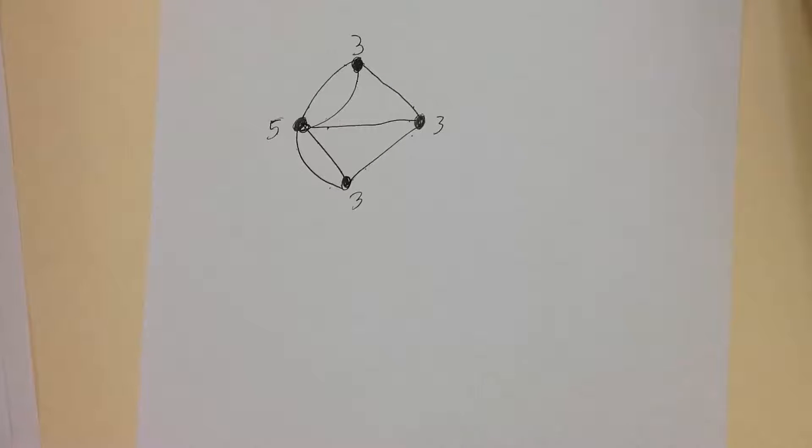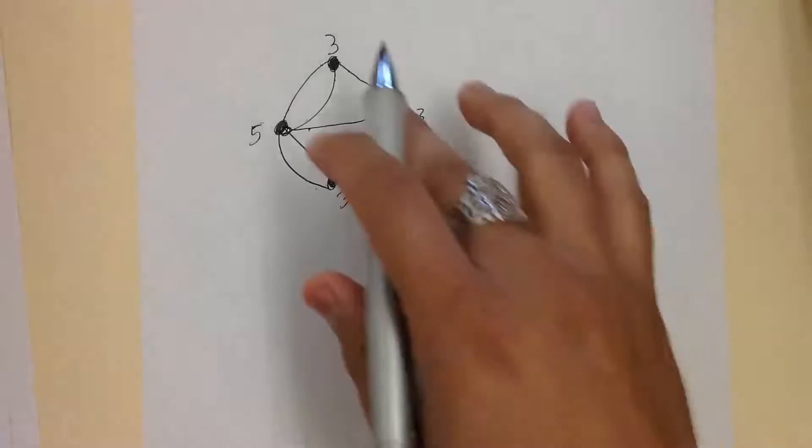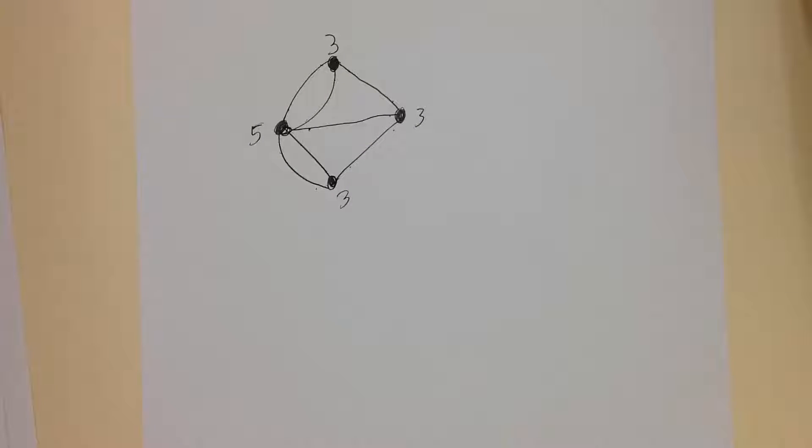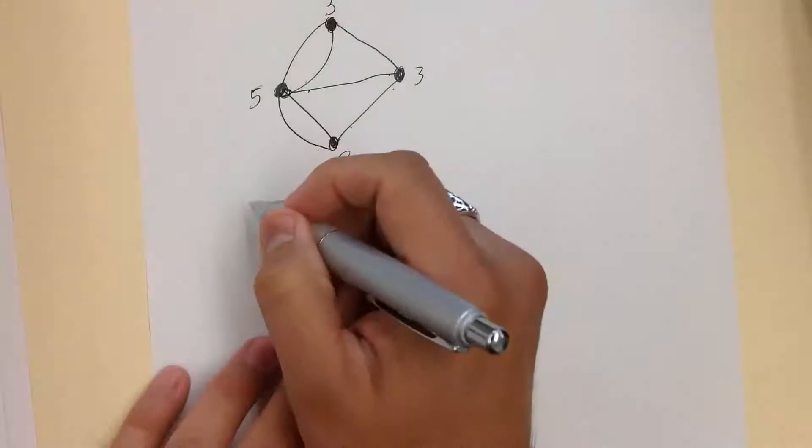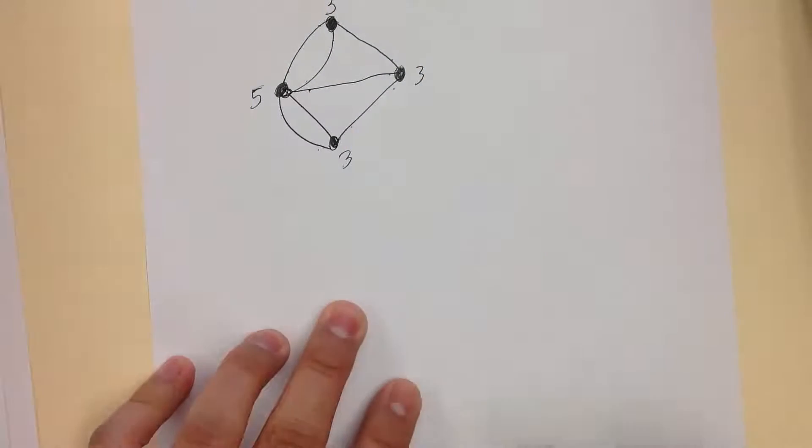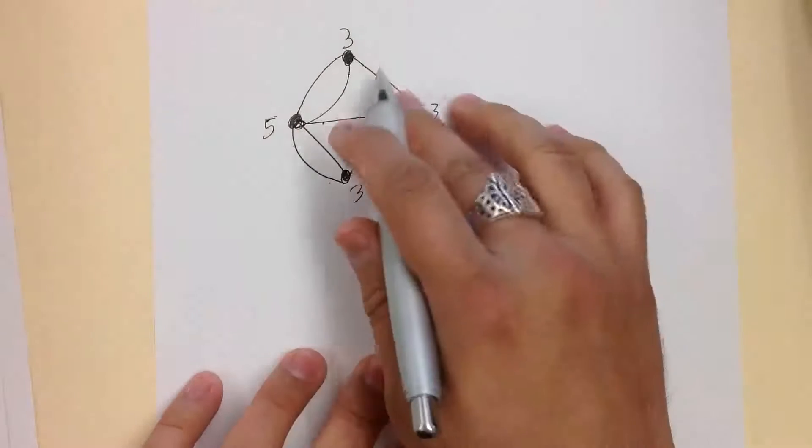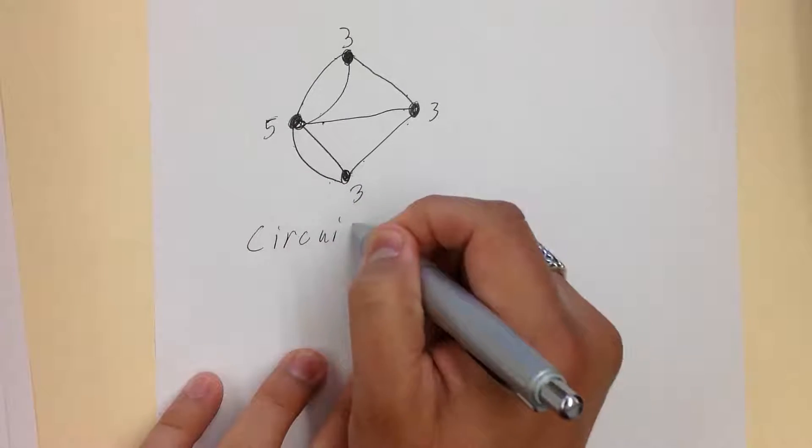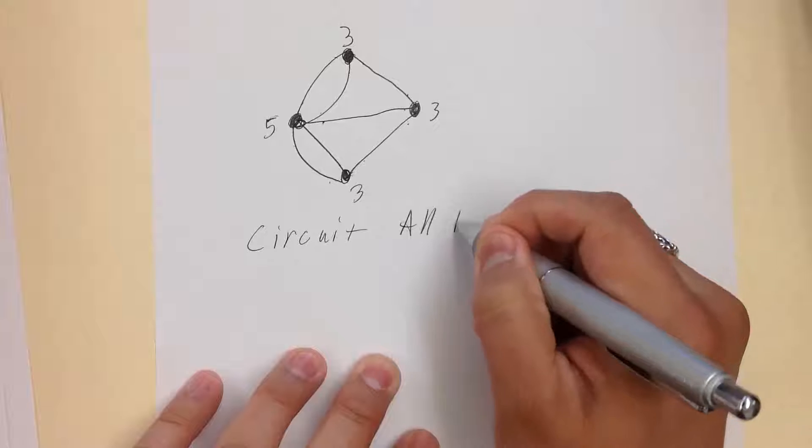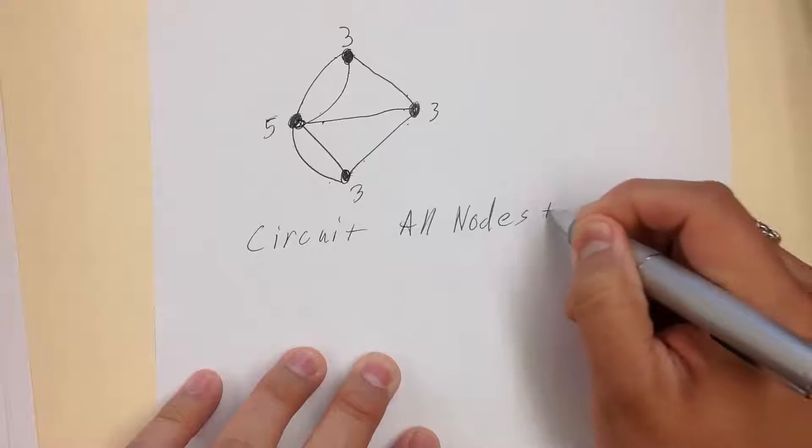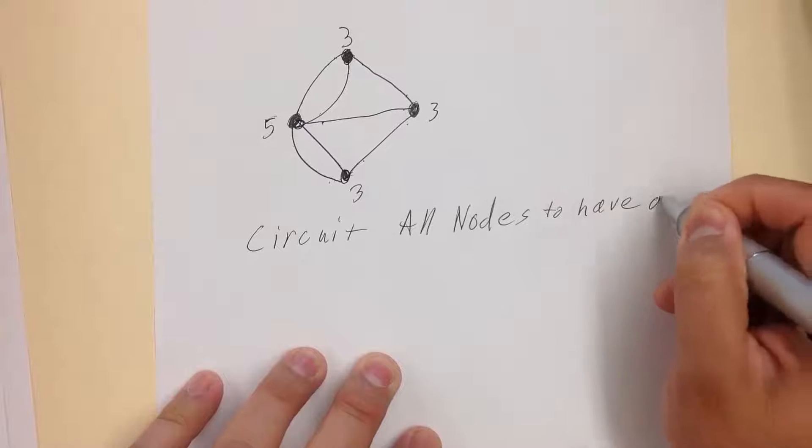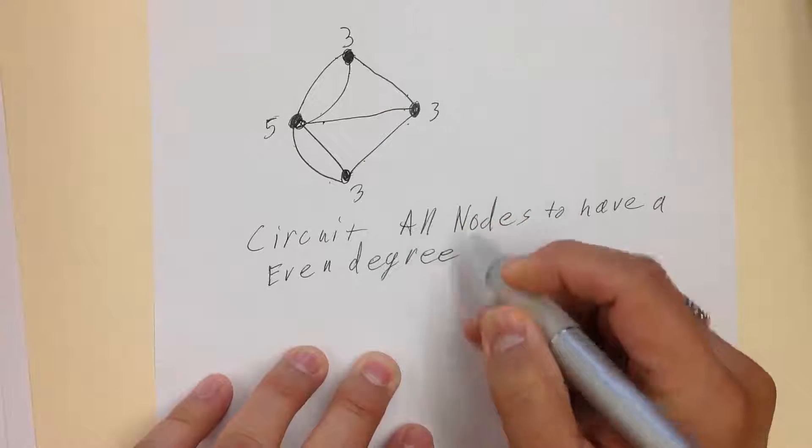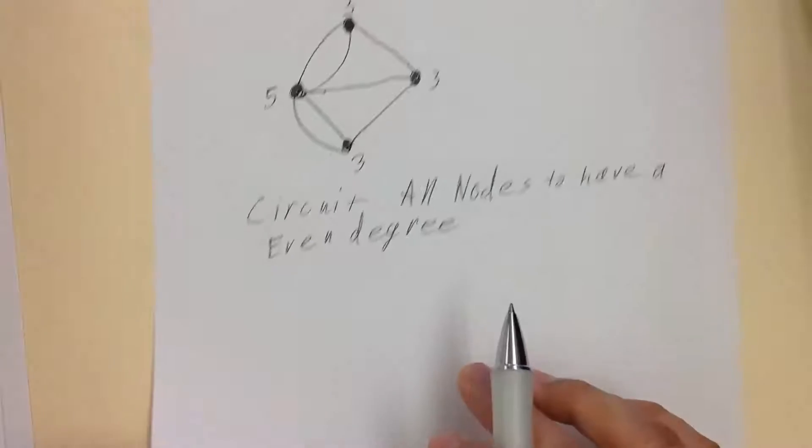Right now you don't know the rules yet. This tells me that just looking at this, there is no circuit or path. How do I know this? We look at the number of even nodes. In order to have a circuit, we need all nodes to have an even degree. That's the rule. That's the first rule. All nodes have to have an even degree.